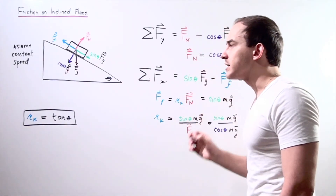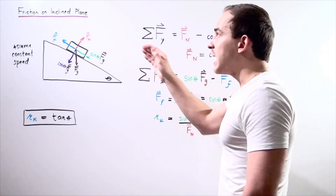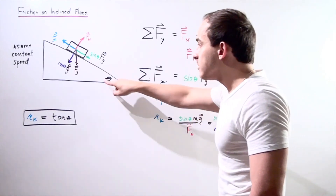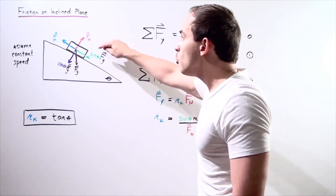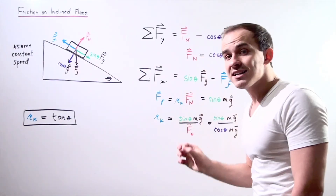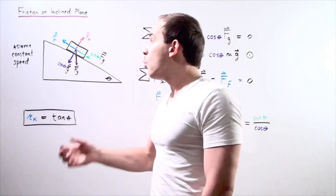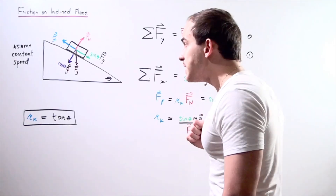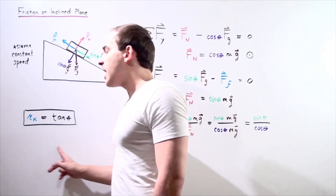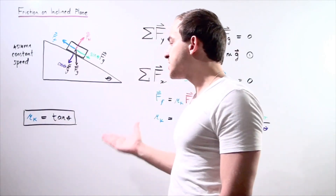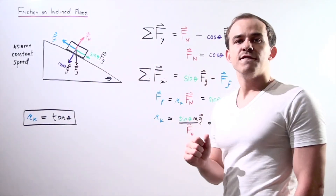This simplifies to: the coefficient of kinetic friction is equal to the tangent of the angle theta. So whenever we have an object traveling down an inclined plane at angle theta with constant velocity, we can find the coefficient of kinetic friction using this very simple equation — simply taking the tangent of our angle theta.